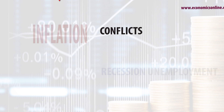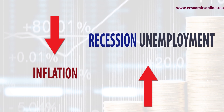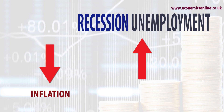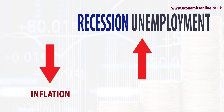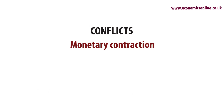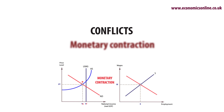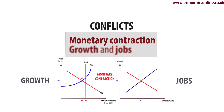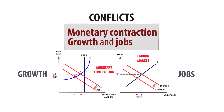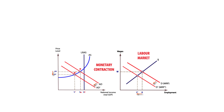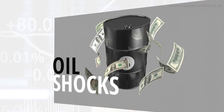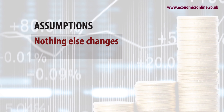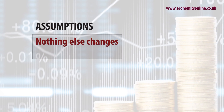Also, consider the conflicts associated with the policy. Most policy objectives conflict with at least two other ones. For example, in using monetary policy to control inflationary pressure, aggregate demand may contract, causing growth and jobs to suffer. A policy might have several unintended consequences. Consider the events that can throw a policy off course. Economists assume nothing else changes, but variables in the real world do change, weakening the effectiveness of the policy, or indeed making the policy too effective.